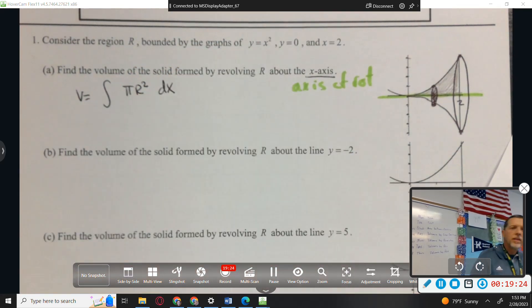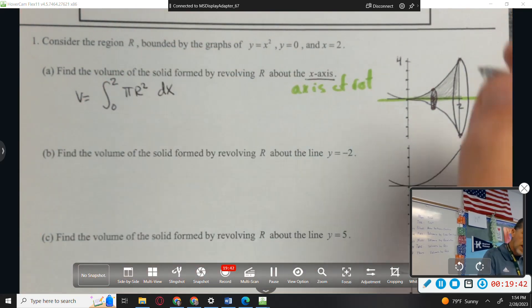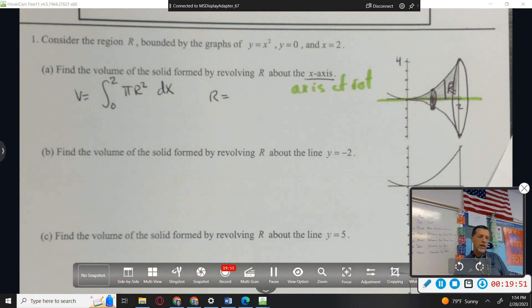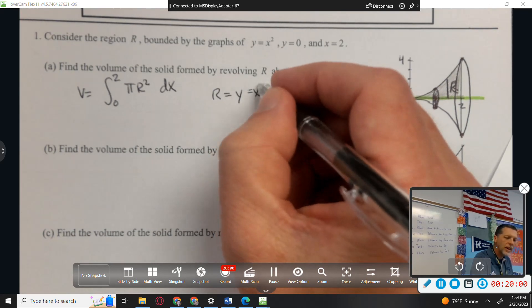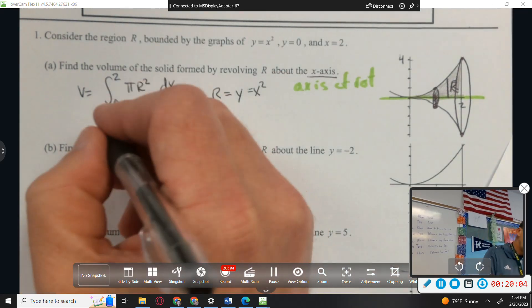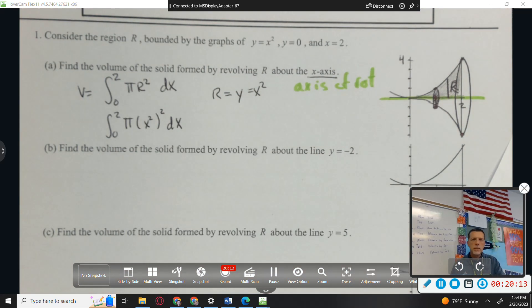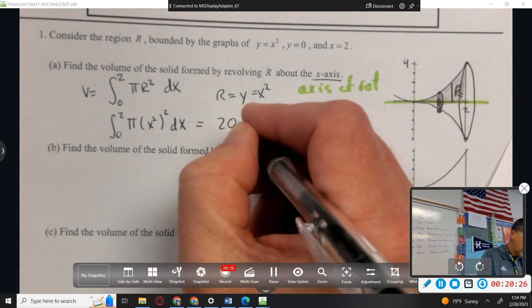So pi r squared dx, because my slices are in the x direction. That means my limits need to be in the x direction. From where to where am I? What's my limits? 0 to 2. And r, the radius of that circle, it's a y. That's fine. But I need it to be in terms of x. So what does that y equal? x squared. The radius is x squared. 0 to 2, pi r squared, dx. Then it's just a calculator problem. 20.106.